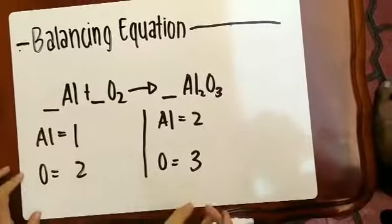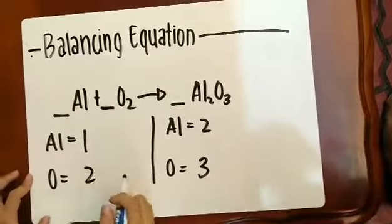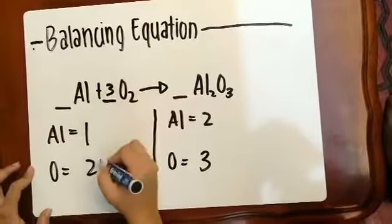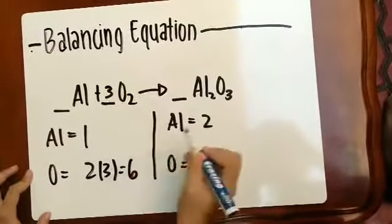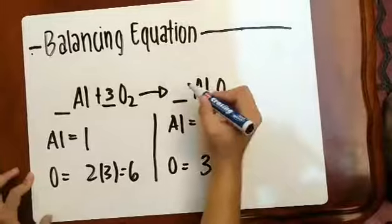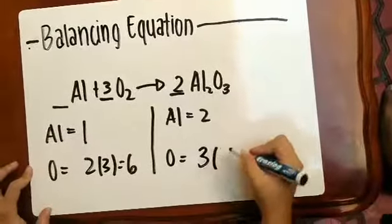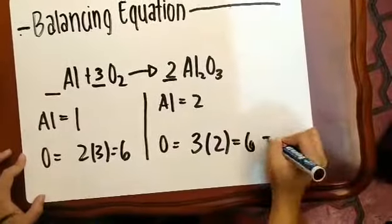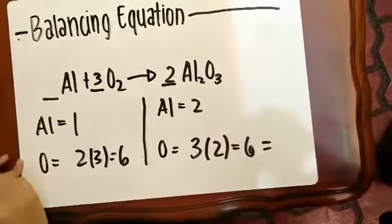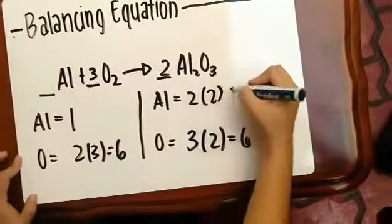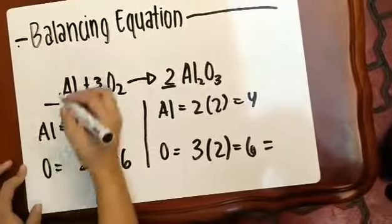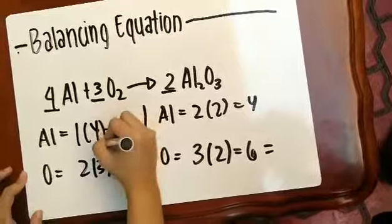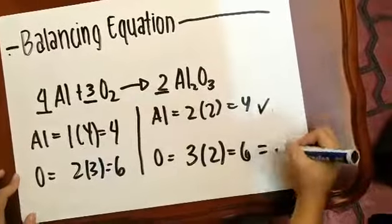As you can see, both of them are not equal. Therefore, for oxygen, we have to add 3 — 2 to 6. It's not equal, so we have to add 2. And for aluminum, it's still not equal, so therefore we have to add 4 for it to be equal.